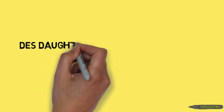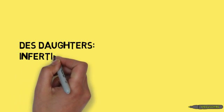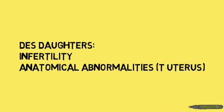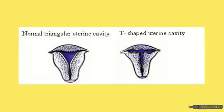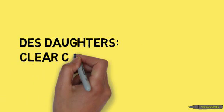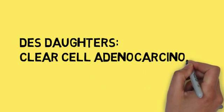DES daughters show infertility and anatomical abnormalities, such as a uterus shaped like the letter T, different from the normal triangular uterine cavity. They also present a rare type of cancer, the clear-cell adenocarcinoma, that manifests around 20 years of age.